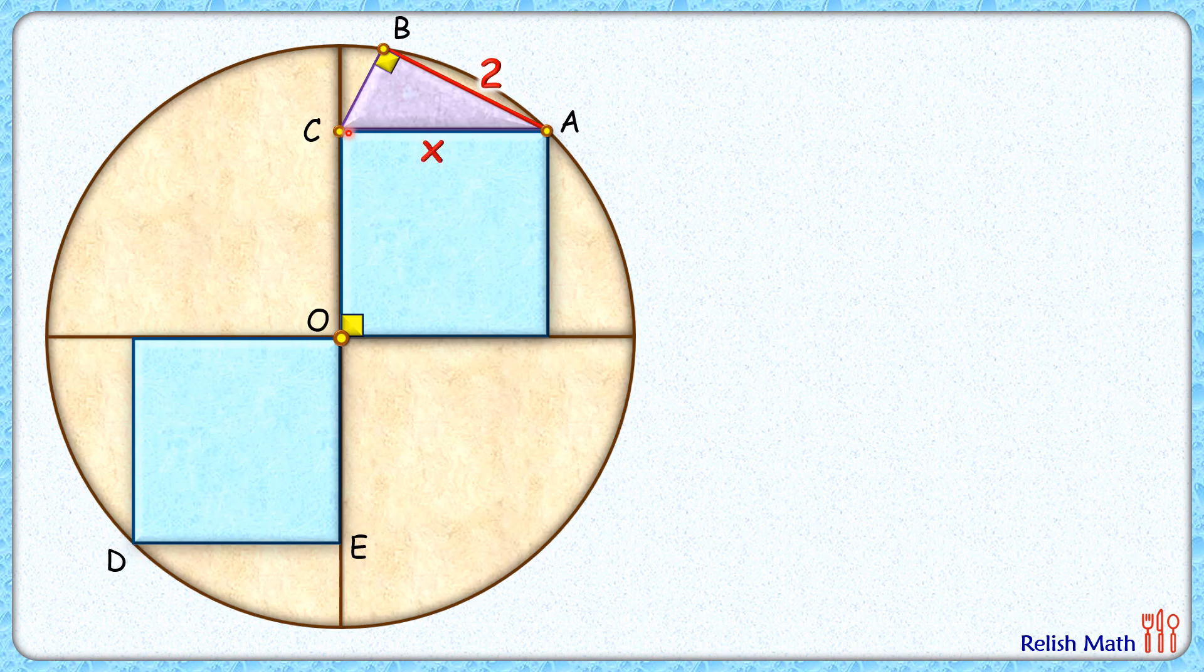Let's draw the diagonal DO here and diagonal OA. Now we know that in a square, the angle between diagonal and side length, that is this angle, is 45°. This angle here is 90°, and this remaining angle is again between diagonal and side length, that's 45°.